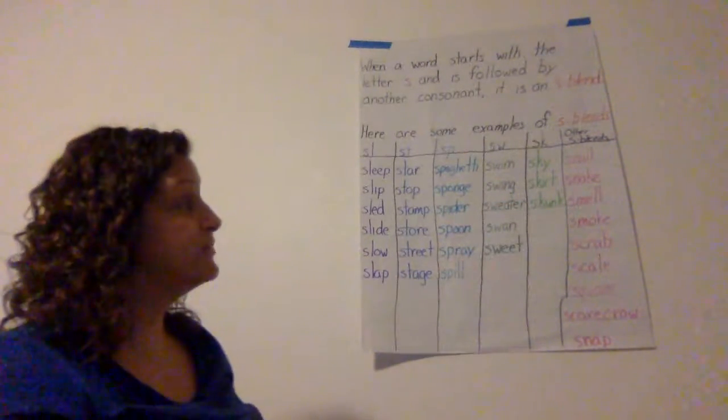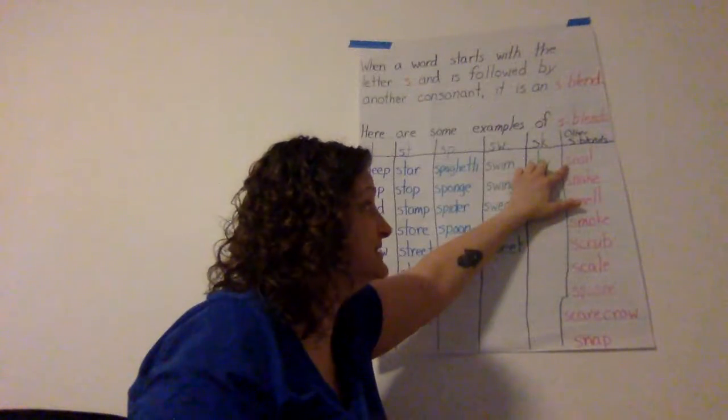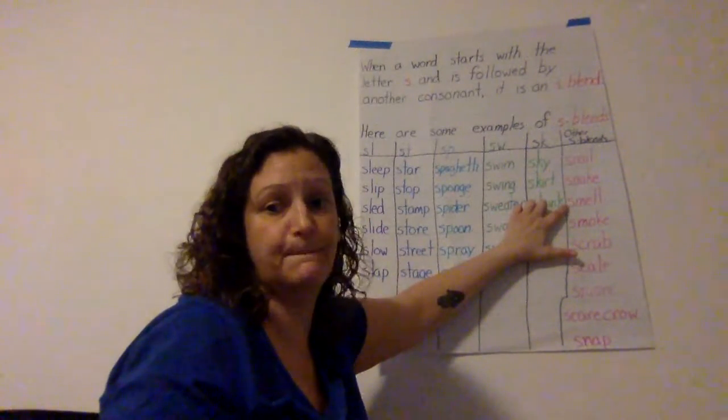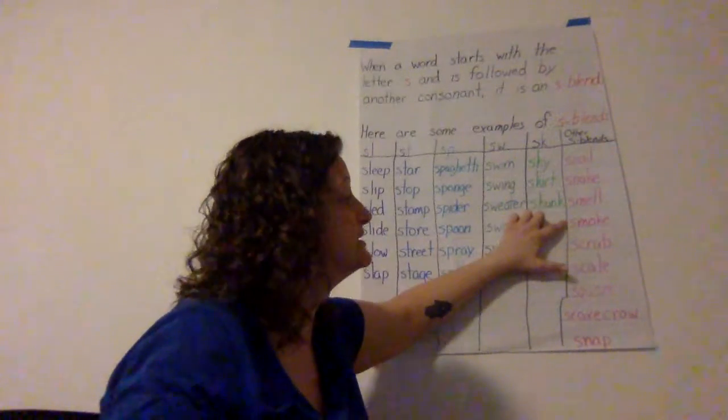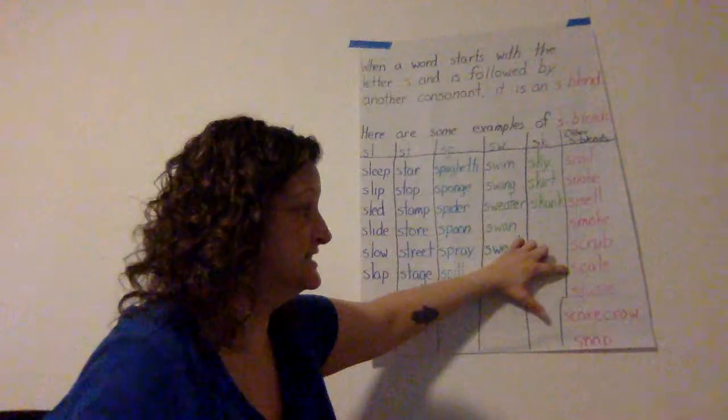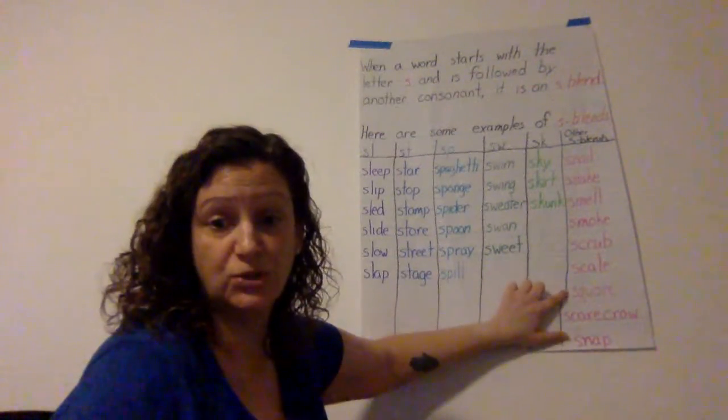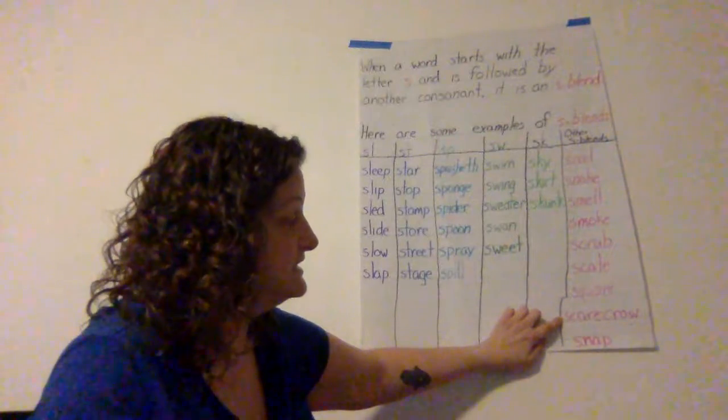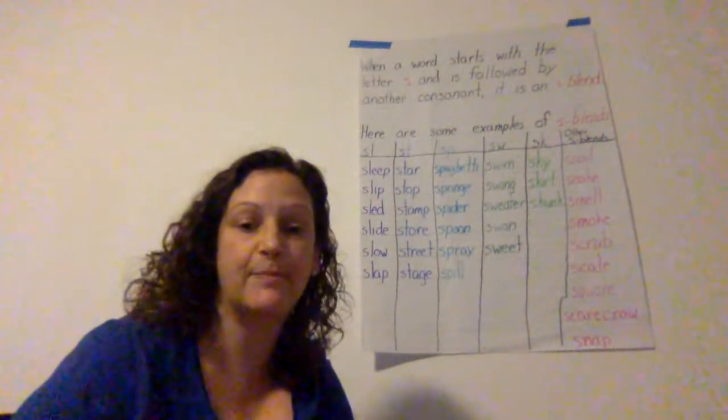And then we have other s-blends. So SN makes the SN sound like snail and snake. SM is like smell and smoke. SCR, scrub. SC, scale. SQU, square. And then I have another SC, scarecrow, and SN, snap.